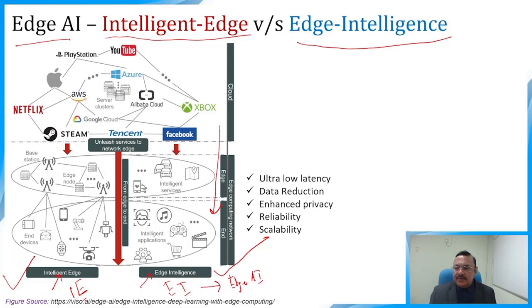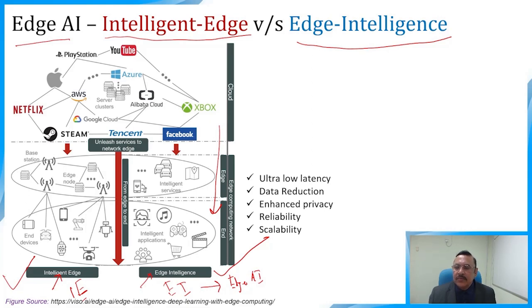Traditionally, AI services such as training and inferencing were performed on the cloud. However, this was not suitable for tasks that require real-time analysis and quick decision-making, such as autonomous vehicles or self-driving cars. Furthermore, moving the high volume of data acquired by large numbers of IoT sensors often becomes inefficient and time-consuming. In such cases, edge computing can play a crucial role enabling intelligent services close to the users or source devices.